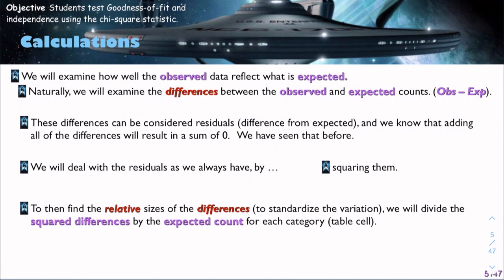We deal with the residuals as we always have by squaring them. To find the relative sizes of the differences or to standardize the variation, we'll divide the squared differences by the expected count for each category, and we do that using spreadsheets.